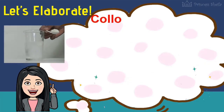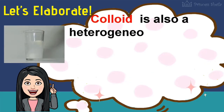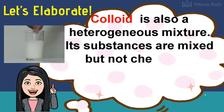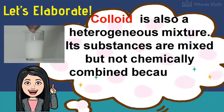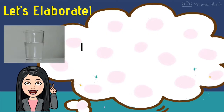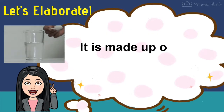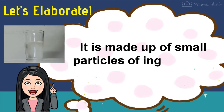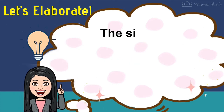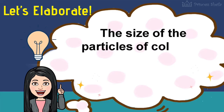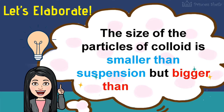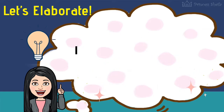Colloid is also a heterogeneous mixture. Its substances are mixed but not chemically combined because they could still be separated. It is made up of small particles of ingredients. Note that the size of the particles of colloid is smaller than suspension but bigger than solution. It can be in solid, liquid, and gaseous form.